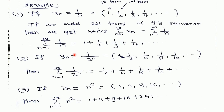For a second example, if we have sequence yn equal to 1/(2^n), we can generate its terms by putting n=1, 2, and so on. Putting n=1 gives the first term 1/2, and n=2 gives the second term 1/4, and so on. Adding all these terms gives the series of 1/(2^n), which equals 1/2 plus 1/4 plus 1/8, and so on.